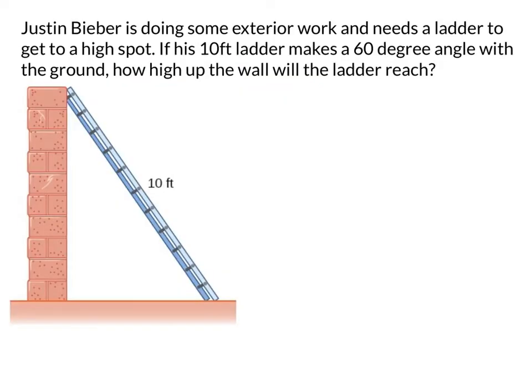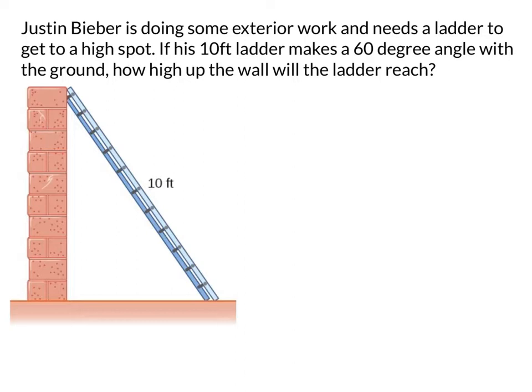And I rounded up on that, so we're getting eight squares of this metal roofing for their super cool recording studio. America. All right, so now we got Justin Bieber doing some exterior work and he needs a ladder to get to a high spot. Now, his ladder that he has is 10 feet and it makes a 60 degree angle with the ground. So, this angle right here is 60 degrees. How high up the wall will the ladder reach? Well, that's 60 and I know this is a right angle. Let's hope that it's a right angle. This is not the Leaning Tower of Pisa he's dealing with. Then I know that this guy is 30 degrees because all the angles should add up to 180 in a triangle. Look at that. Coming back. Full circle. America.